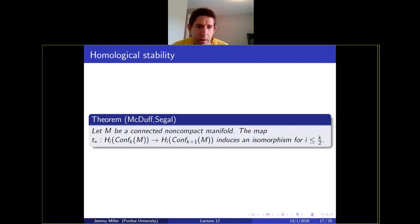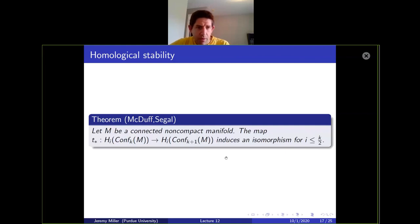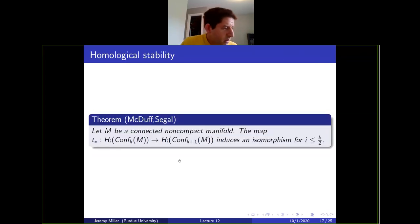This is a theorem of McDuff and Segal: McDuff proved the stabilization map is an isomorphism in a range but didn't specify the range; Segal gave an explicit range. The main tool for proving this theorem is compactly supported cohomology.